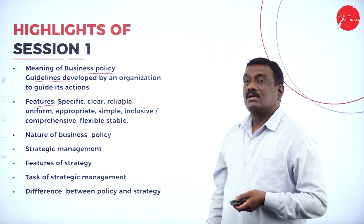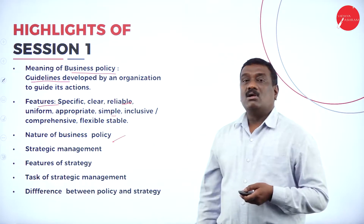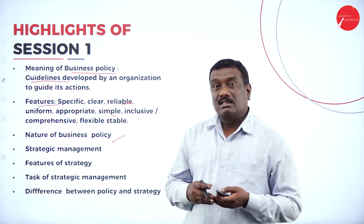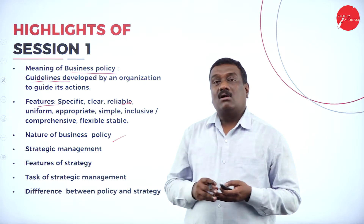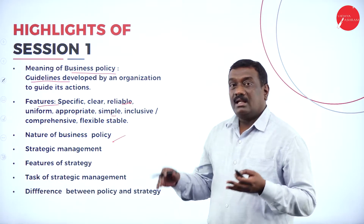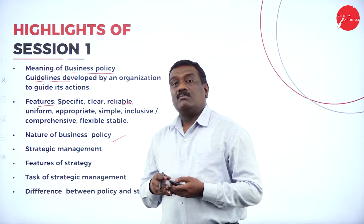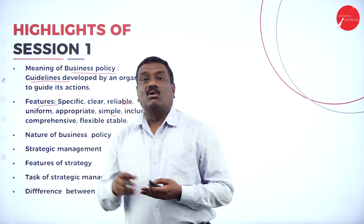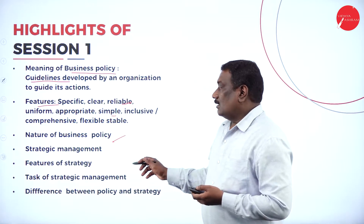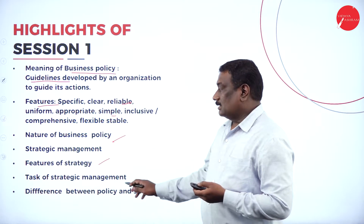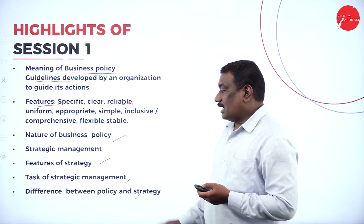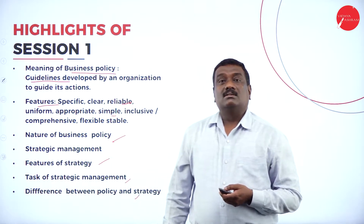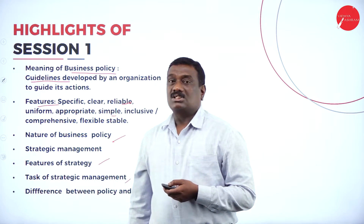Then coming to the next topic which I covered is about the nature of business policy and the meaning of strategic management. What is strategy? I explained that it is derived from the Greek word 'strategos' or 'stratus', where it says the army are to lead. So strategy means it is an idea or a tactic which has been implemented for the fulfillment or in order to achieve the goals, targets, or objectives of the organization. Then the features of strategy, the task of strategic management, the five components, and the difference between policy and strategy — these are the various important topics covered in session 1.